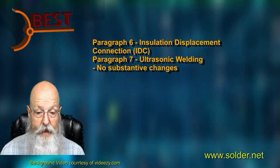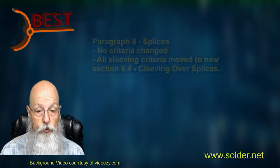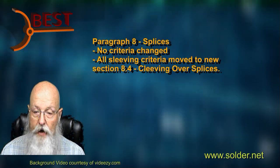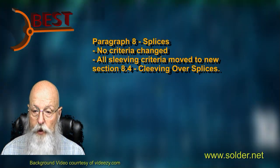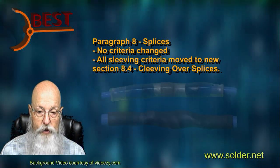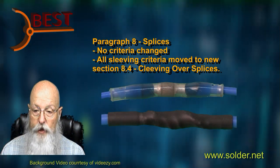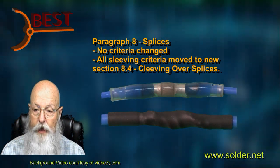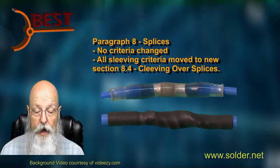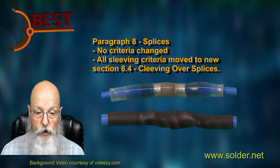Paragraphs 6 and 7 remain unchanged. In a major rearranging of the criteria and an effort to remove duplicated criteria, all the sleeving requirements for splices have been removed from the individual splice sections and moved into a new section, 8.4, Sleeving Over Splices. All the sleeving criteria remains the same.